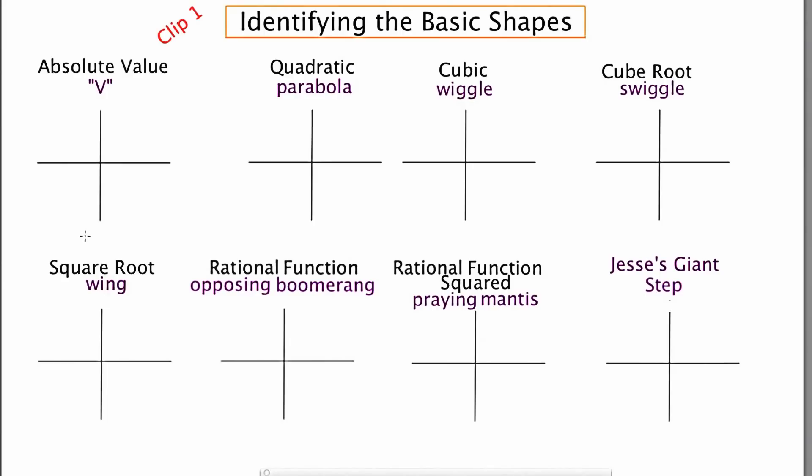So the first one is the absolute value function, which is y equals absolute value of x. The second one is a quadratic function, y equals x squared.